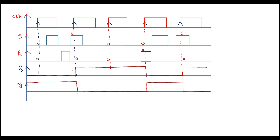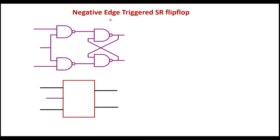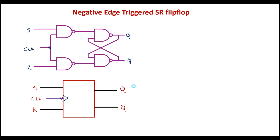Now let us see how the negative edge-triggered SR flip-flop works. A negative edge-triggered flip-flop is represented with a bubble (circle) along with the edge mark at the clock input, indicating the negative edge of the clock. The inputs are S and R, and the outputs are Q and Q-bar. The truth table for both positive and negative edge-triggered SR flip-flops is the same.